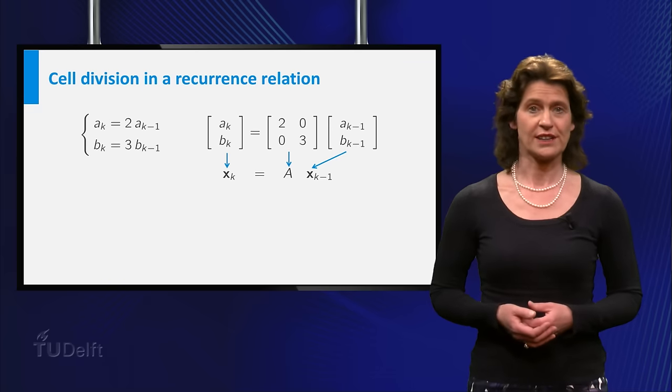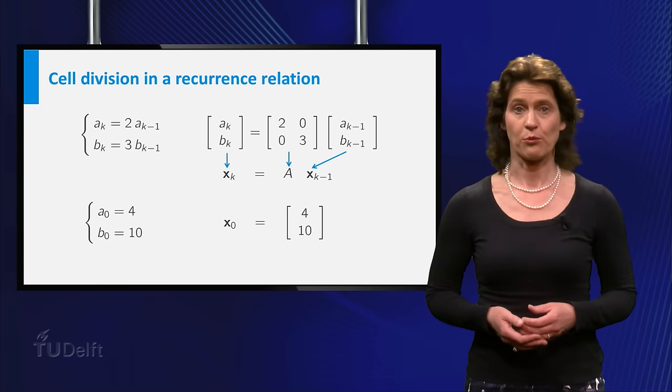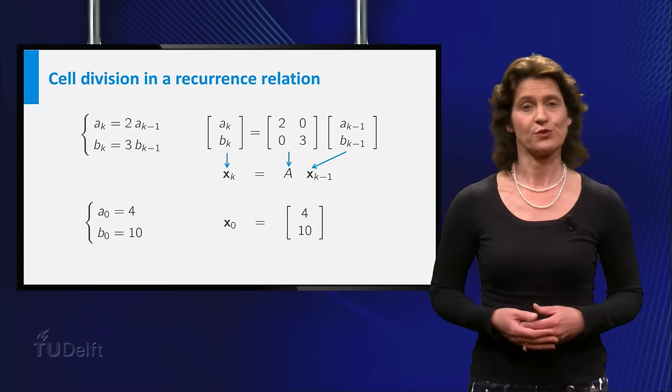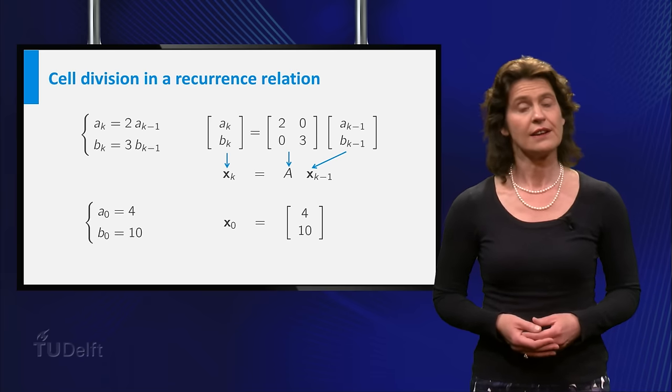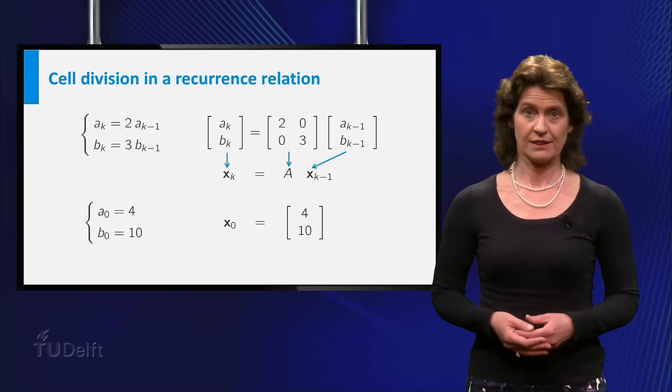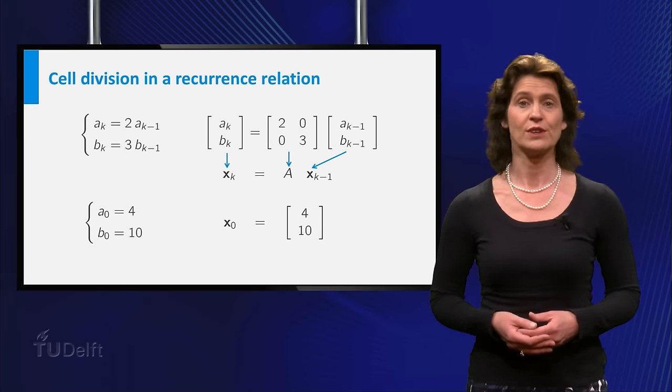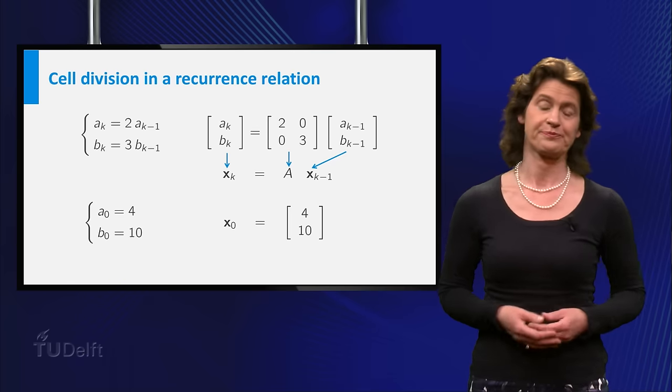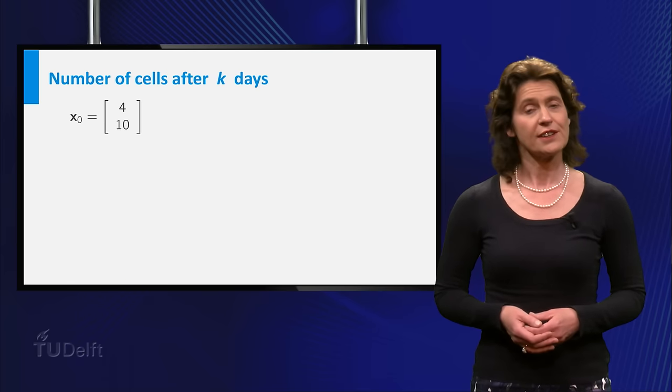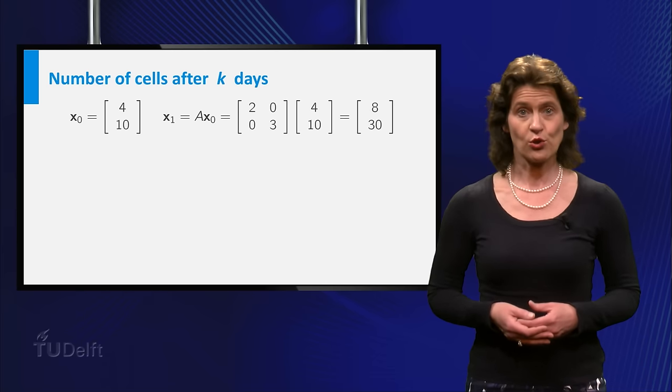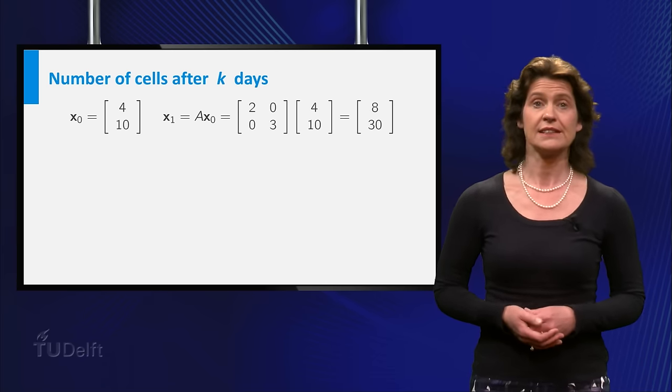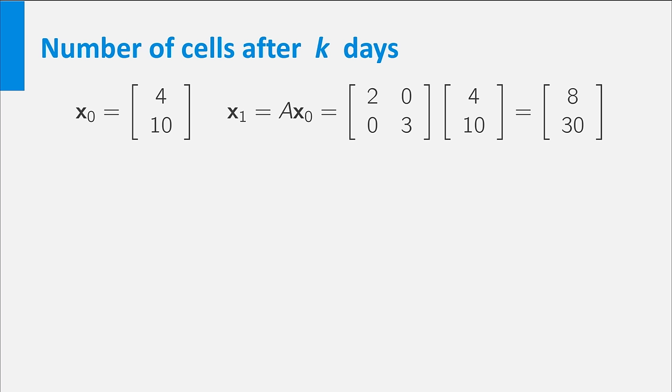Suppose you started your experiment with 4 cells of type 1 and 10 cells of type 2, then this means A0 equals 4 and b0 equals 10. So the vector x0 is equal to 4, 10. Starting with 4 cells of type 1 and 10 cells of type 2, the number of cells of each type on the first day is equal to x1 which is equal to A times x0.